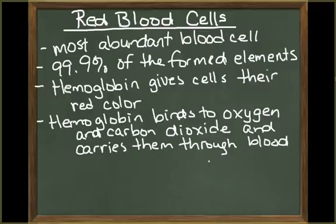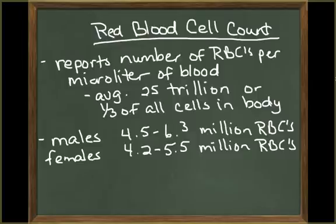Hemoglobin binds to oxygen and carbon dioxide and carries them throughout the blood vessels. A red blood cell count reports the number of red blood cells per microliter of whole blood. A single drop of whole blood contains approximately 260 billion red blood cells. The average adult has 25 trillion red blood cells, accounting for roughly one-third of all cells in the human body.